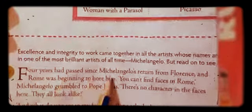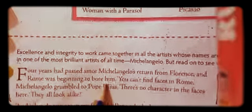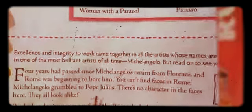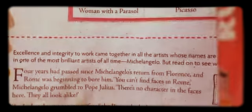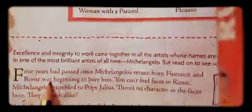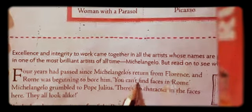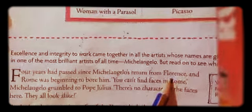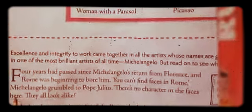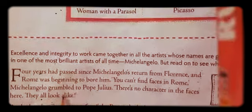Four years had passed since Michelangelo's return from Florence and Rome was beginning to bore him. He came back from Florence and now Rome was beginning to bore him — after coming to Rome, he was feeling it as a boring place.